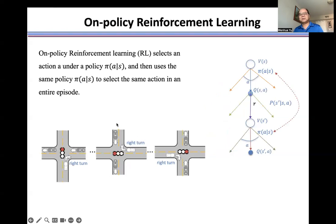On-policy reinforcement learning means starting from S, we use the policy pi to select A. In next state S prime, we still use the same policy to select action.